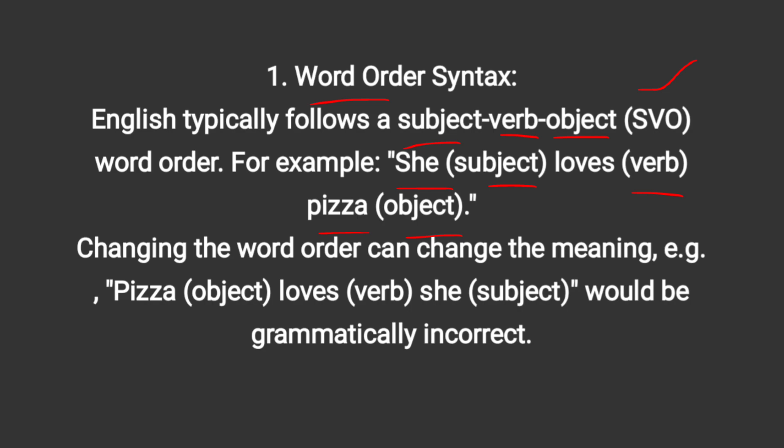As mentioned, the English language structure is subject, verb, and object. Changing the word order can change the meaning and make a sentence grammatically incorrect. For example, 'Pizza loves she' is totally incorrect — 'pizza' is the object, 'loves' is the verb, and 'she' is the subject. In English, the subject comes first, then the verb, and finally the object.